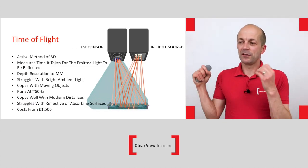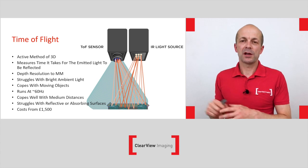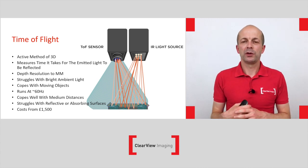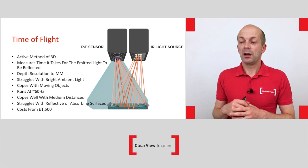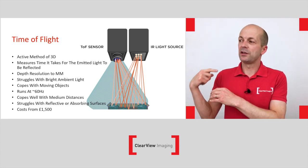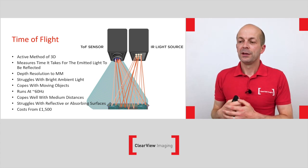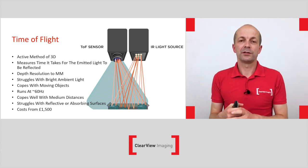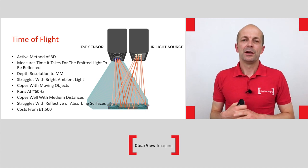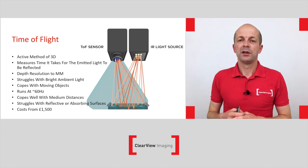Because there's an IR light source, very bright ambient light is going to cause it to struggle. However, it will cope with moving objects — over a production line or on the front of a forklift looking at boxes before picking them up. It copes well with medium distances; the limiting factor is how far the IR light source can reach, so it won't work over very long distances. Highly reflective or absorbing material could be a challenge with time of flight — that's probably one of the biggest downsides. The price point is one of the best, around £1,500 for a time of flight camera.